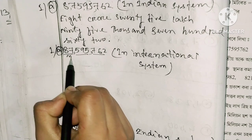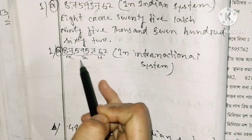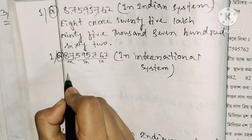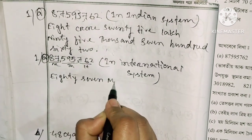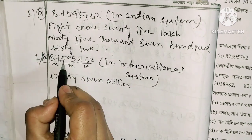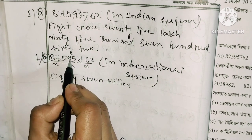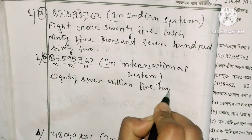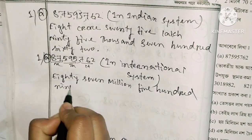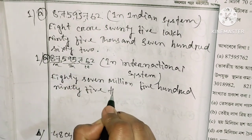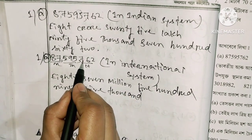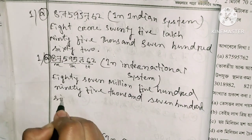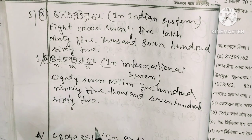In India: million, million, thousand — while in the international system it is also million. Now, 595 — five hundred ninety-five. We can keep it apart: five and ninety-five thousand. That was about seven hundred sixty-two.